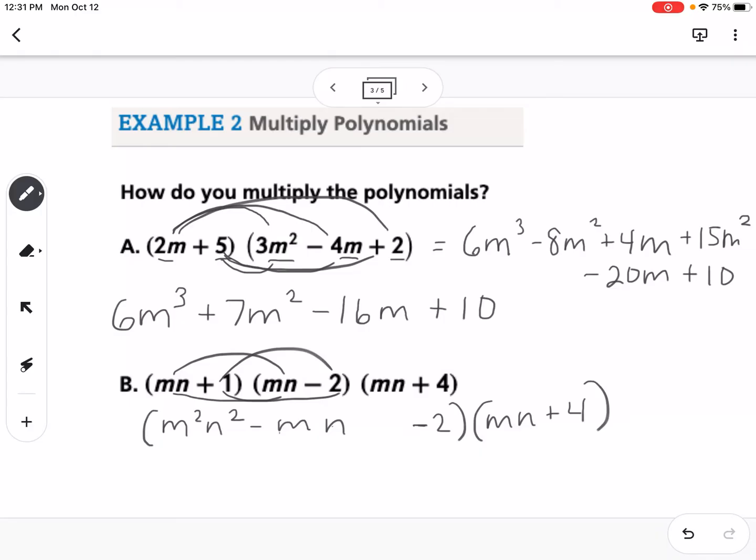So now again I have a trinomial times a binomial, so I'm going to have 6 terms here. So this would be m cubed, n cubed, plus 4m squared, then minus m squared, n squared, minus 4mn, and then minus 2mn, minus 8. So that would be my final answer.